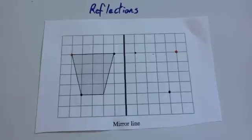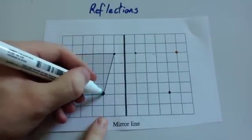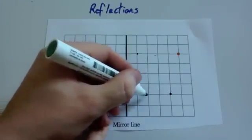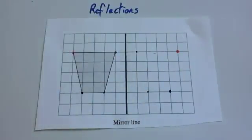And finally, for this one, to the mirror line, you go 1, 2 lines across. So you're going to go number 2. 1, 2. So you go to that. So there you can see that you've got your image.